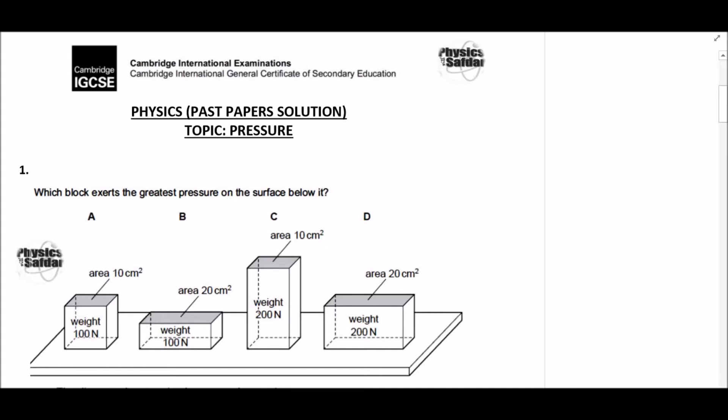Question number one: which block exerts the greatest pressure on the surface below it? In this diagram you can see we have four blocks — their weight and areas of the base are given and we need to select which exerts the greatest pressure. To calculate the pressure, the first thing we should know is the equation of pressure: pressure equals force per unit area.